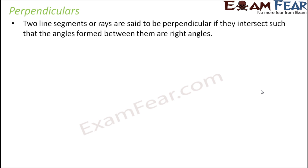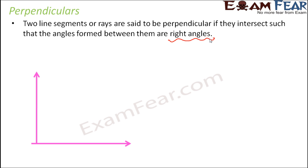Now let's talk about perpendiculars. We all know that two line segments or rays are said to be perpendicular if they intersect such that the angles between them are right angles. So the two line segments should make 90 degrees to each other.